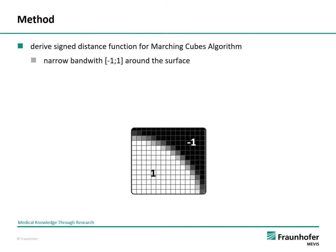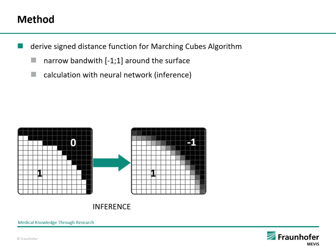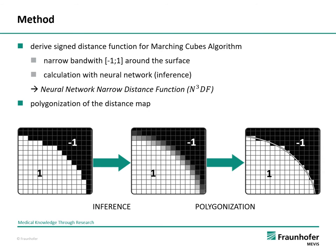This signed distance function has a narrow bandwidth in the range of minus 1 to 1 around the surface. Voxels near the surface get a value between minus 1 and 1 corresponding to the distance of the voxel's center to the object surface. The values for other voxels are 1 for voxels inside and minus 1 for voxels outside the surface. The signed distance function is calculated with a neural network based on the binary mask, and we name this function the Neural Network Narrow Distance Function, N3DF. Before inference, we prepare the binary mask by changing the label for outside from 0 to minus 1. The output of the neural network, the N3DF, can then be polygonized with marching cubes, yielding the reconstructed surface hidden in the binary mask.